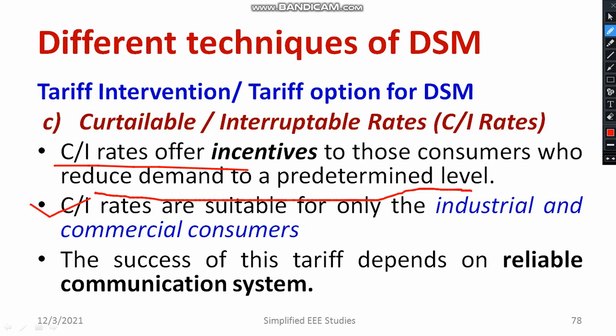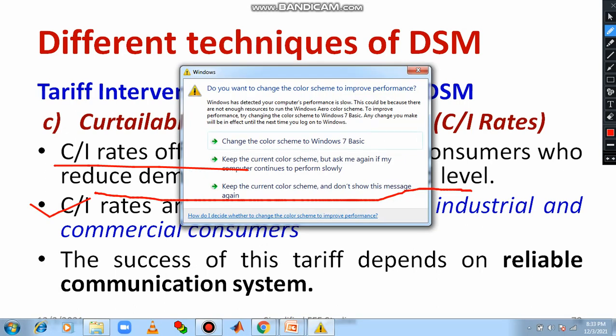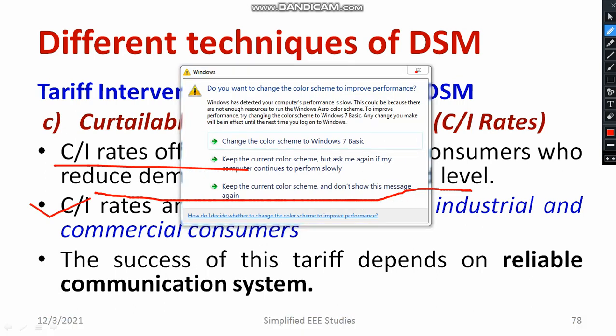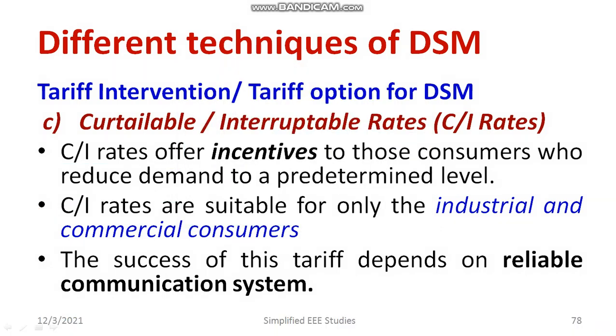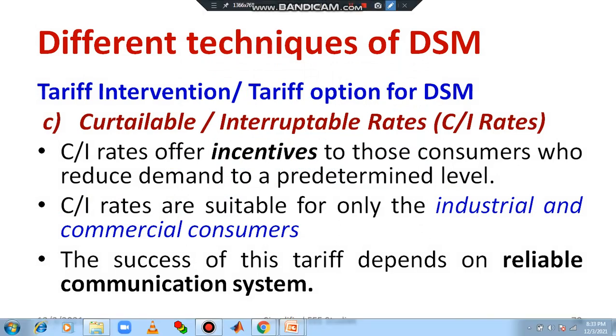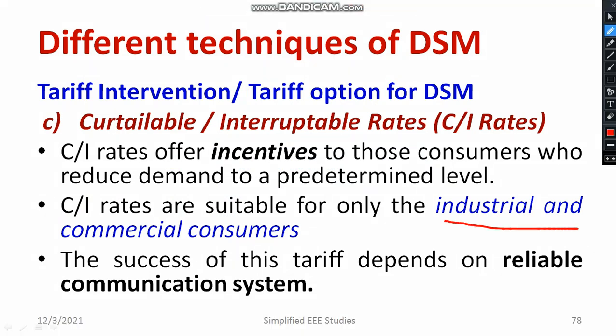The CI rates are suitable only for industrial and commercial customers — it is not suitable for domestic customers. It is applicable only for bulk-level consumers, not for light or small domestic consumers. Also, proper and reliable communication is very essential for this type of tariff.